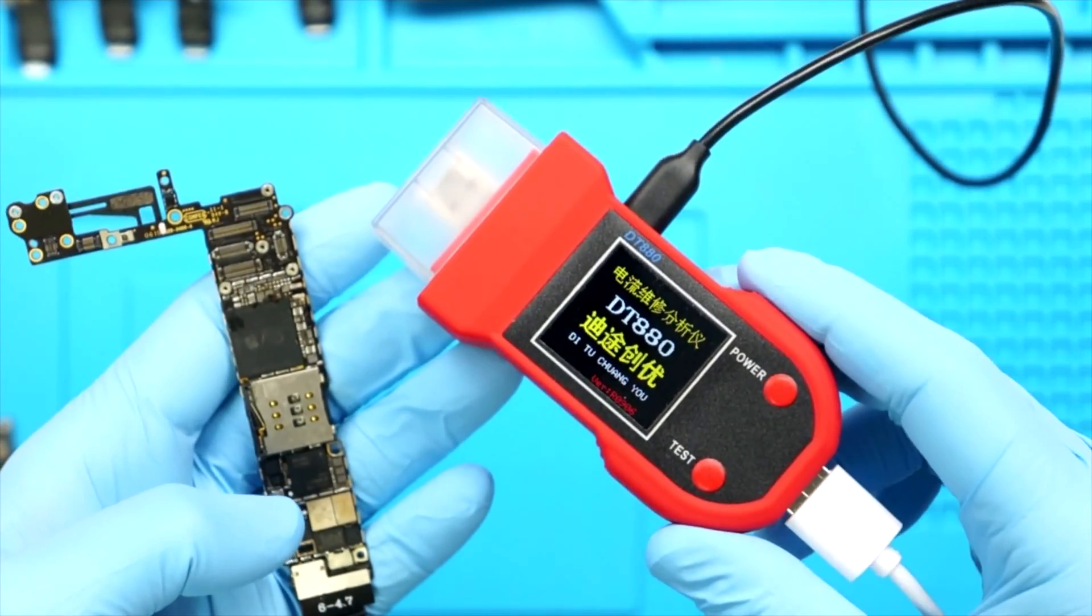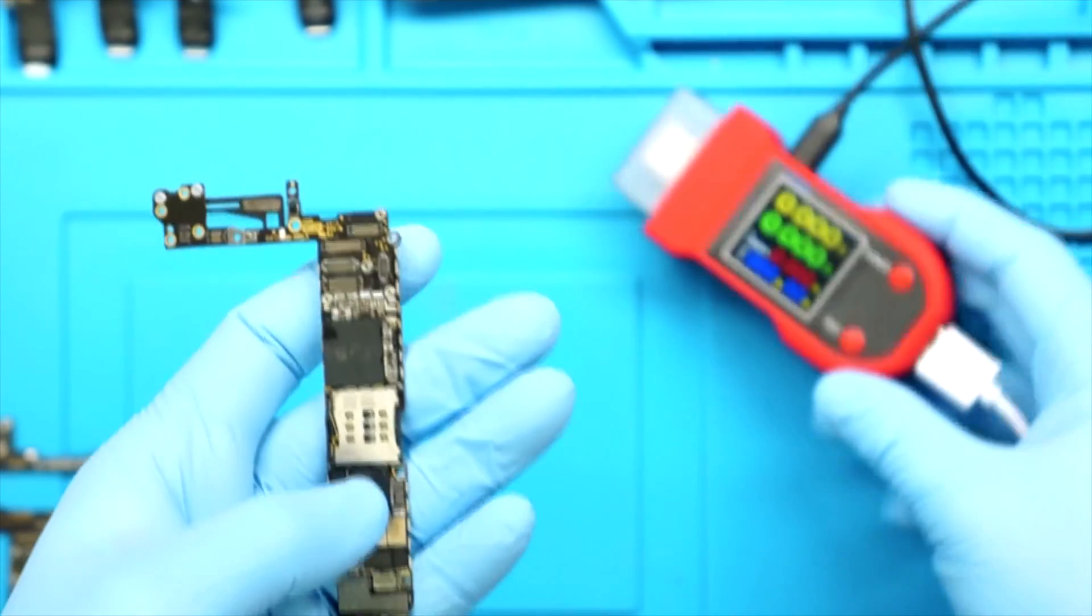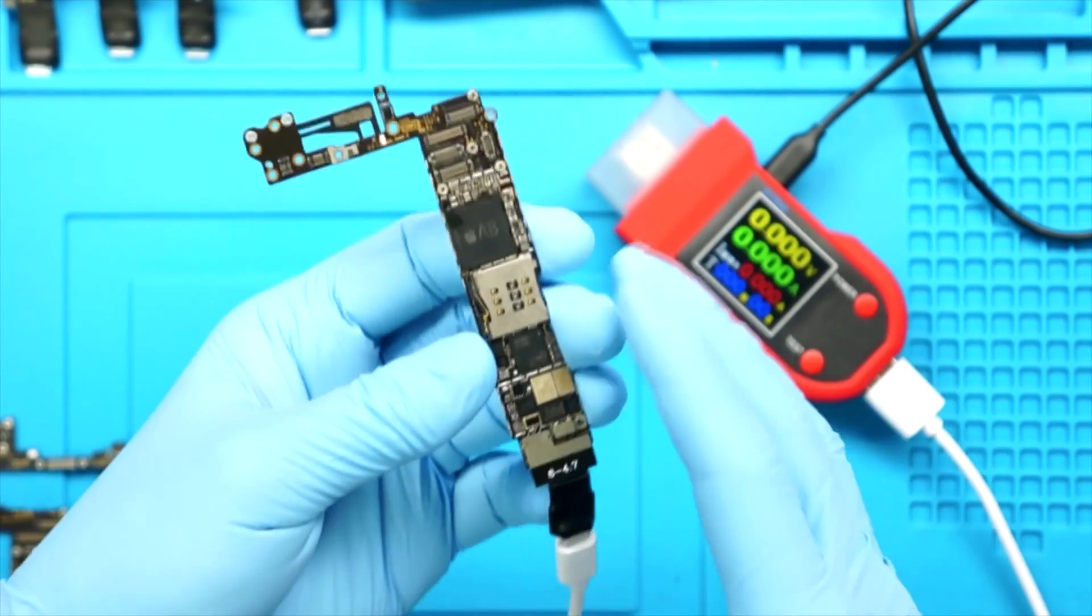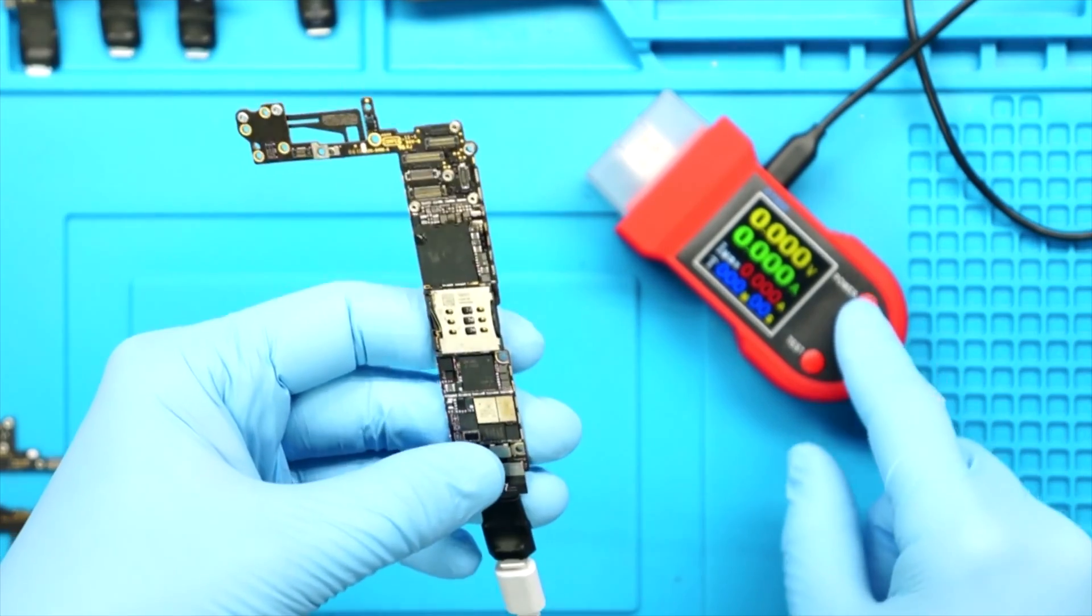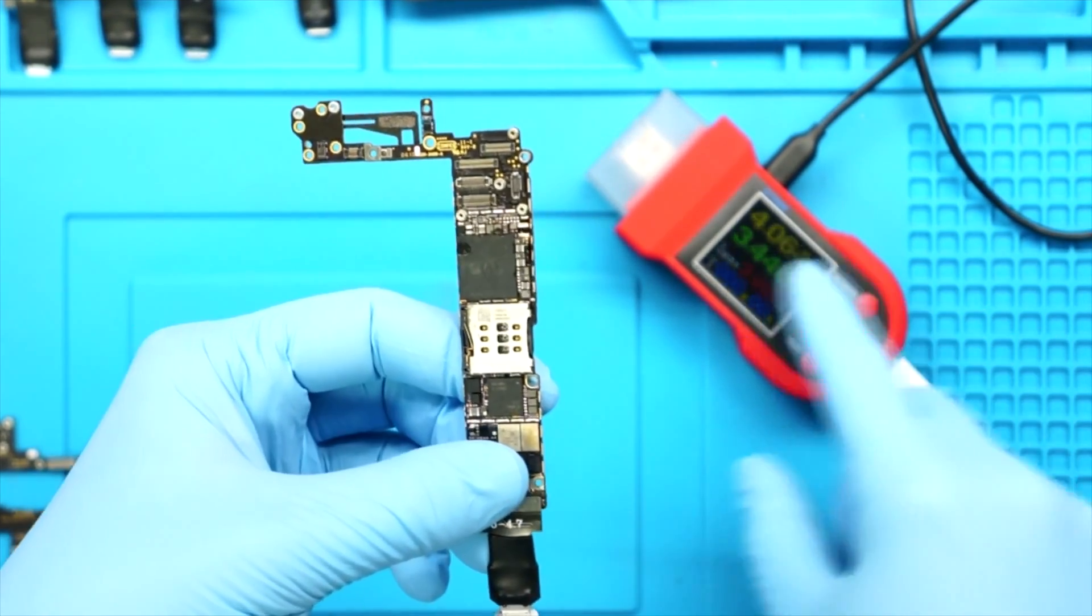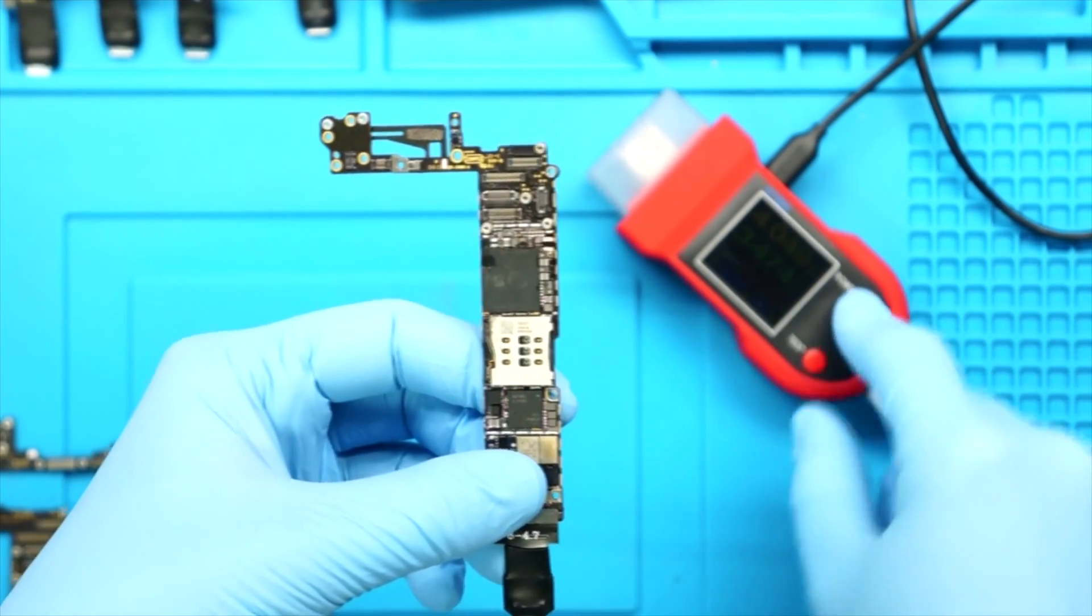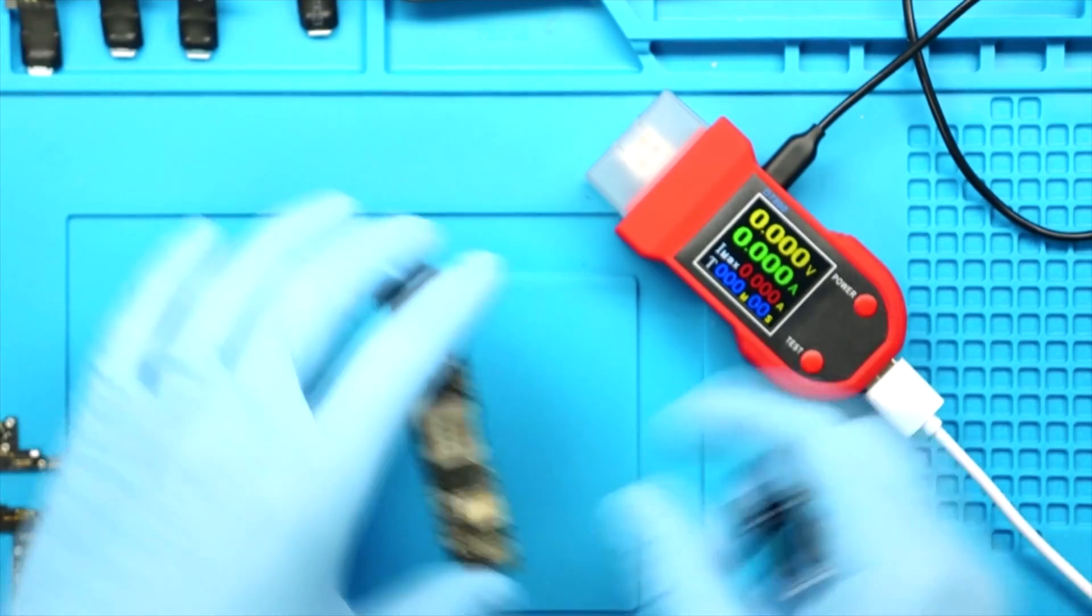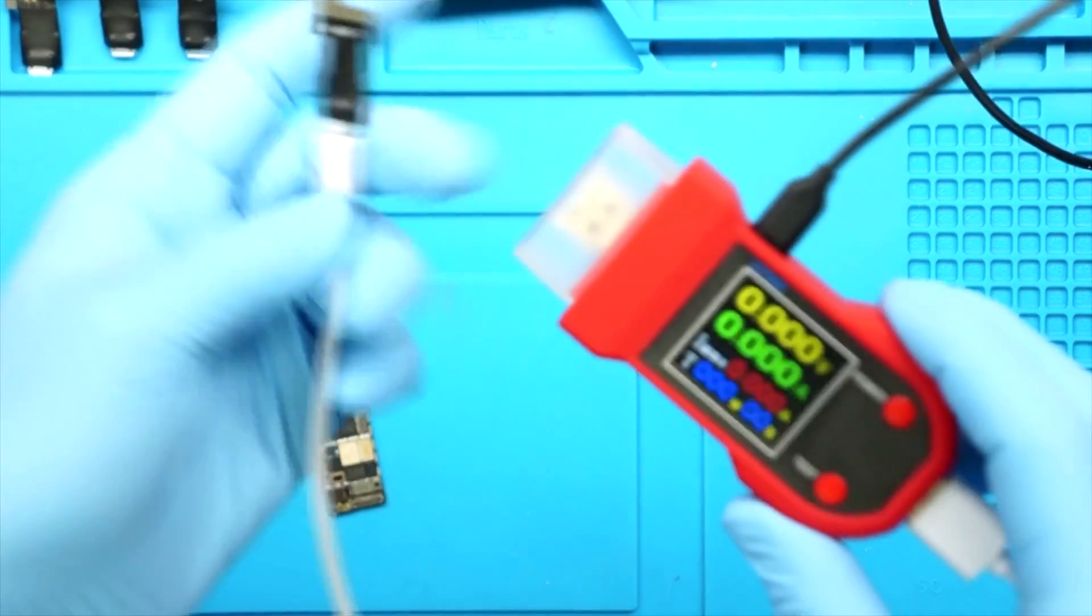And then it will actually restart. So something like this, what this would indicate is that it's trying to pull power immediately when plugging the battery in. So when you simulate and mimic the battery by pressing power, you can immediately see that it goes to 3.4 there. So pretty cool. This does give you a little bit of insight. Hopefully it gives you an understanding on what the DT880 does.